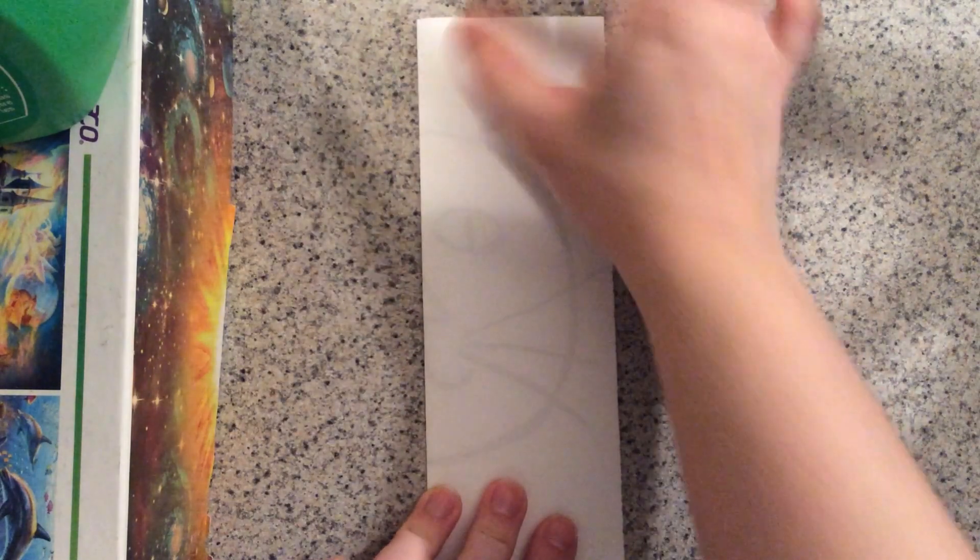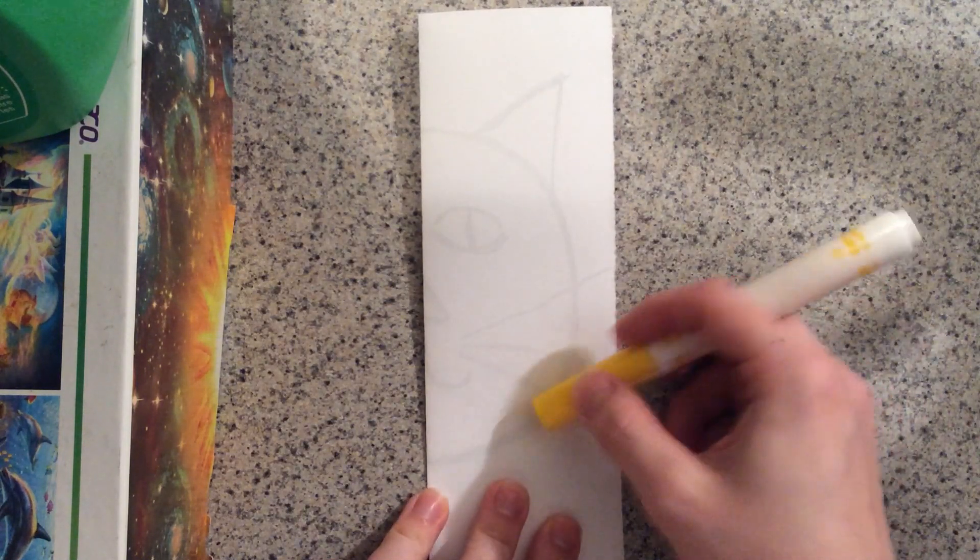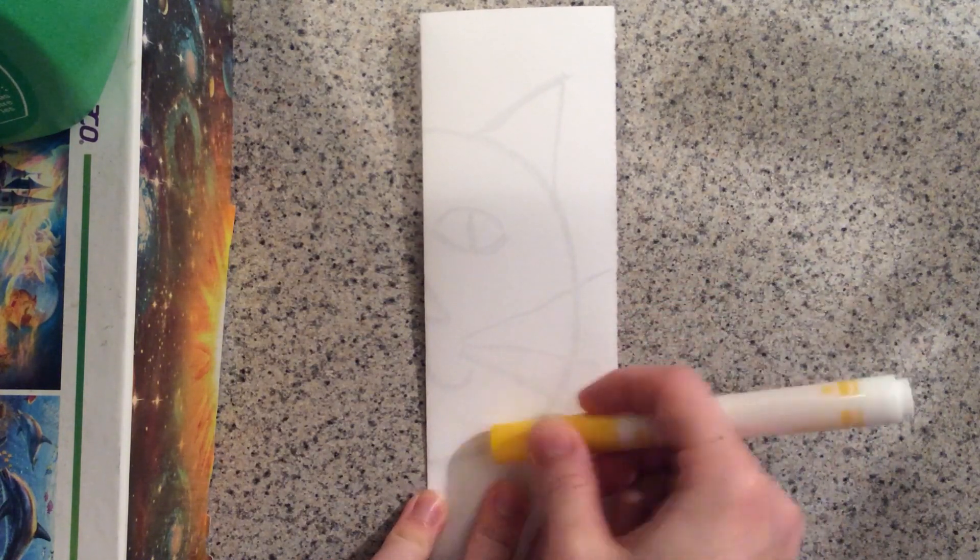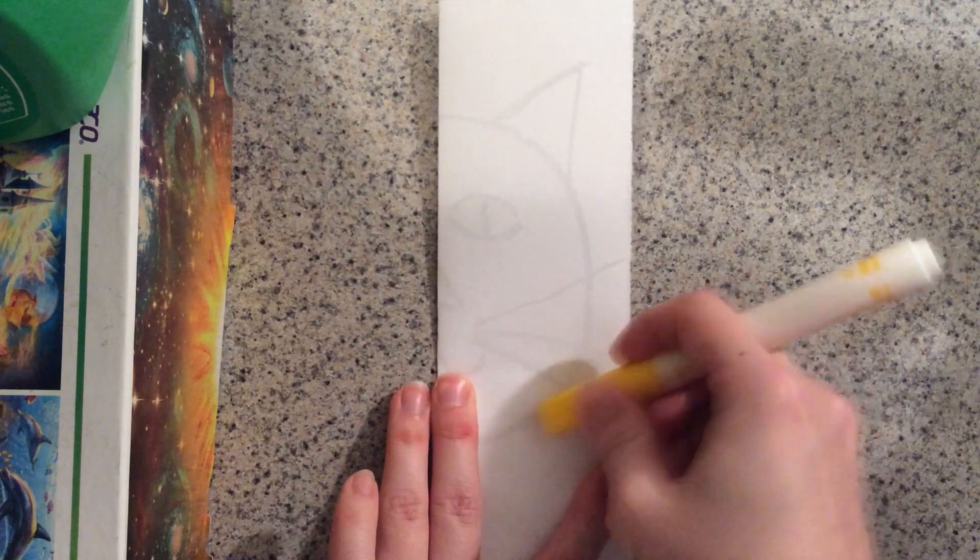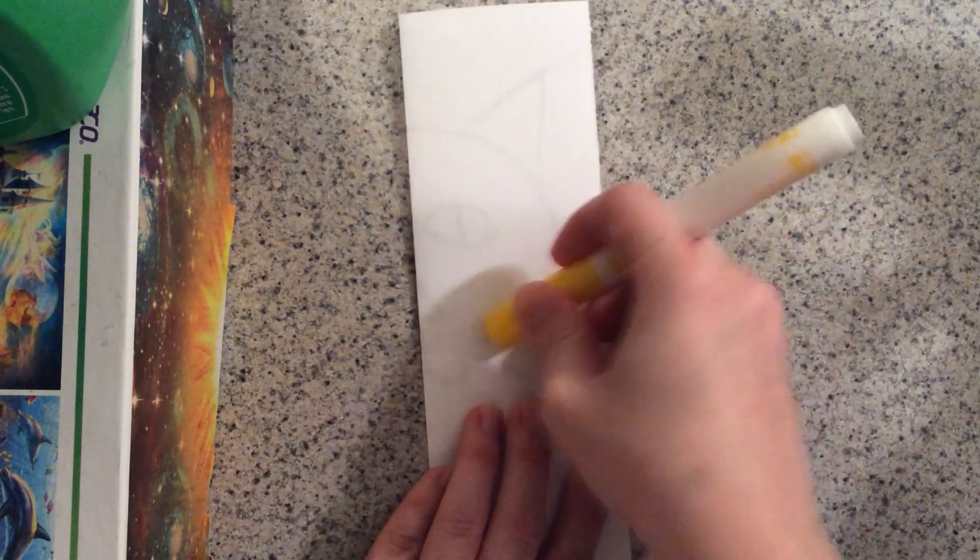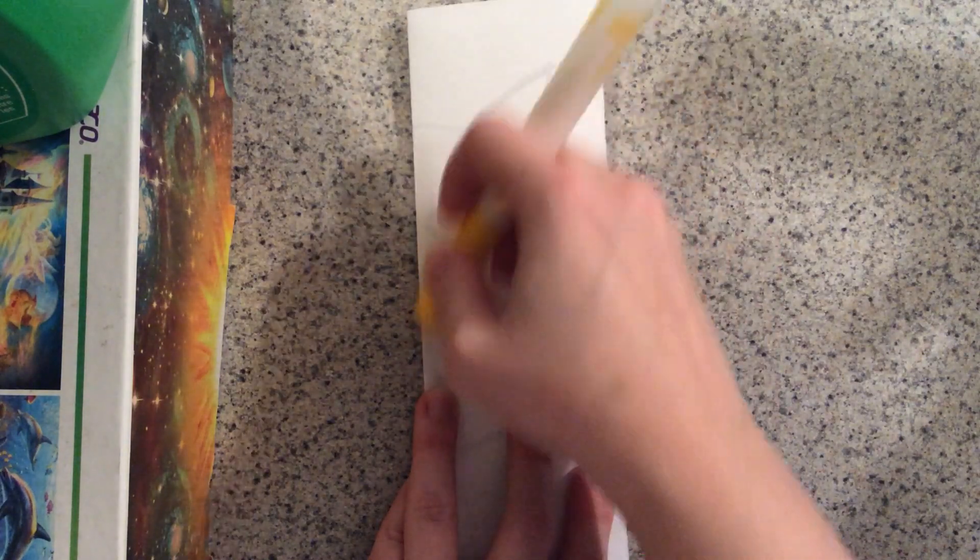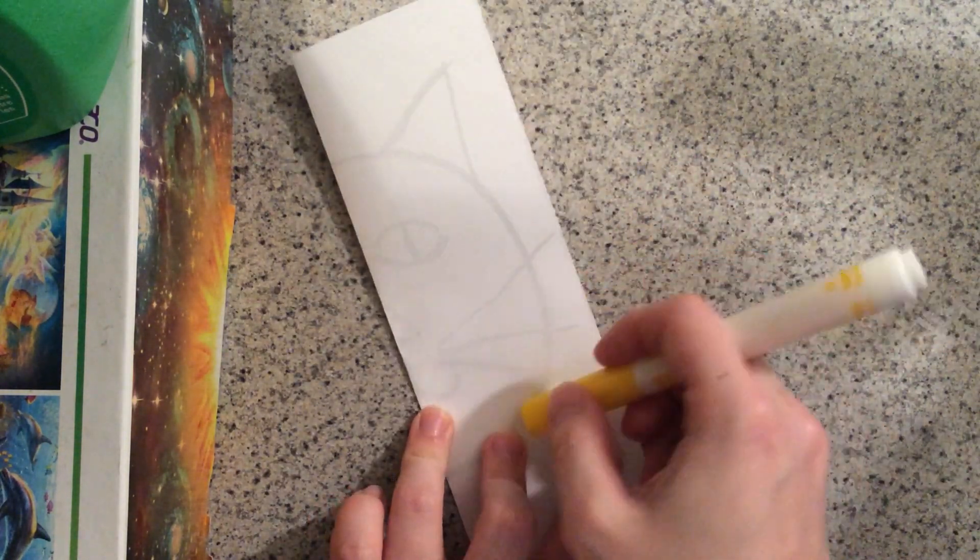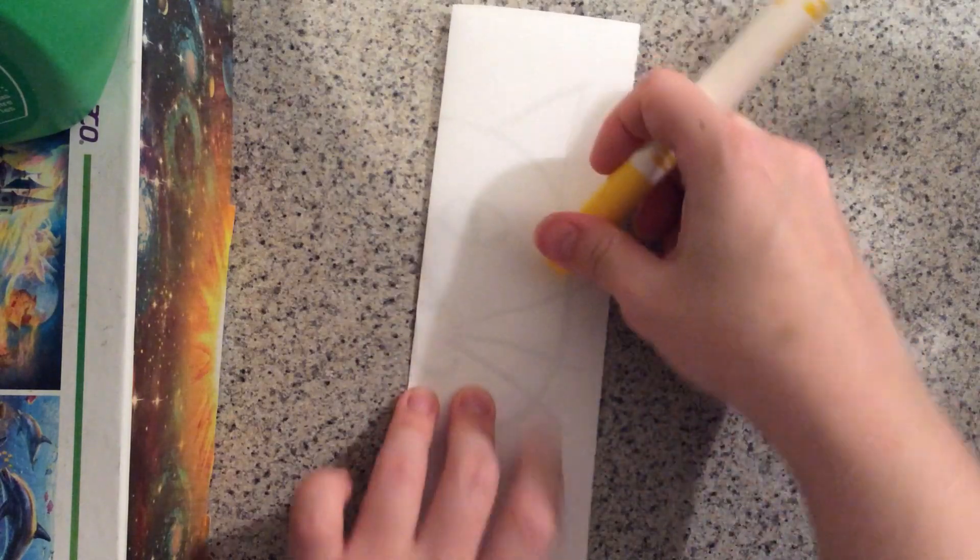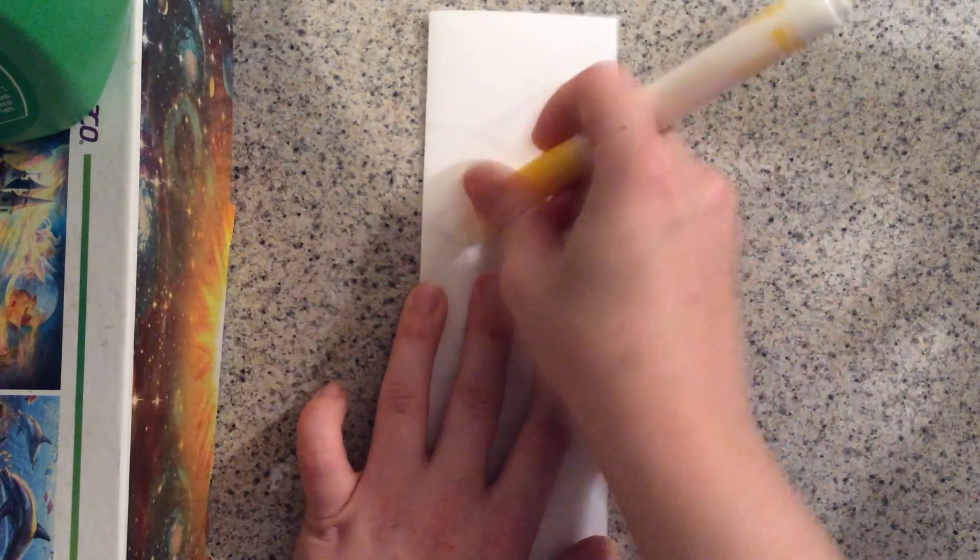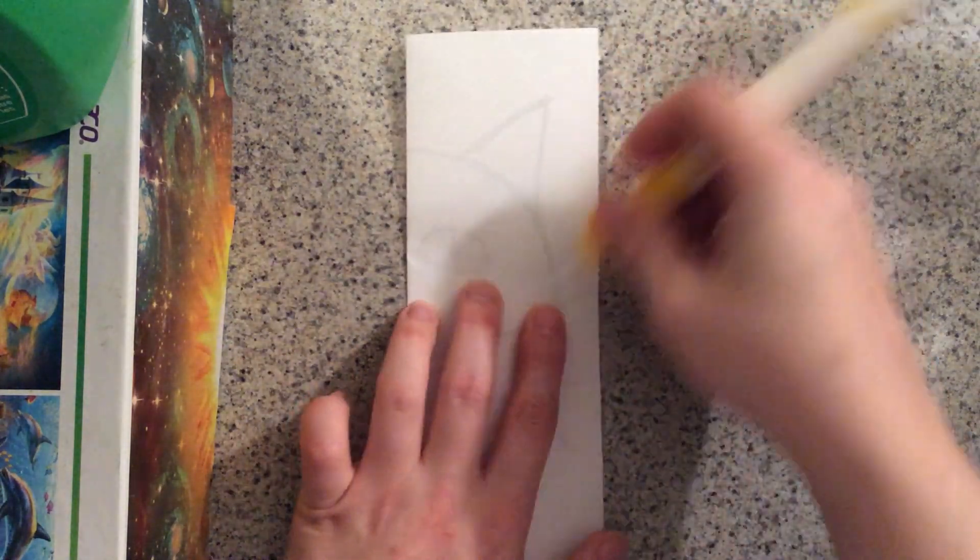So what you're going to do is you are going to take your marker and you are going to rub on top of all of those lines. Now if you had a popsicle stick, obviously you can use that as well or any other tool that's going to help you rub those lines down. Because what you are doing is you are pushing that crayon that you just drew onto the second half of your paper.